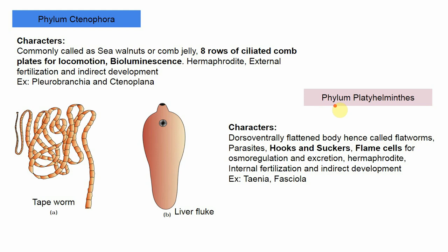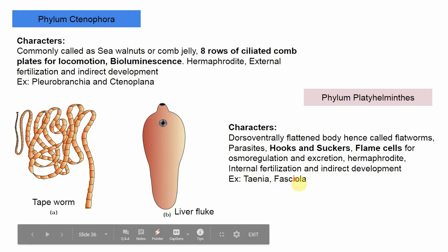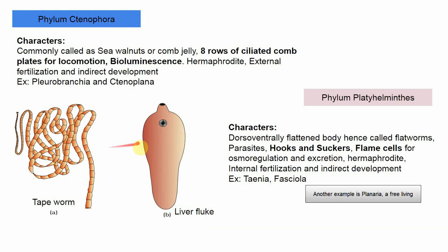The next is phylum Platyhelminthes, commonly called flatworms because the body is dorsoventrally flattened. The majority are parasitic; very few are free-living. In parasitic forms, special structures called hooks and suckers help in adhering to the host. Flame cells are present, mainly for osmoregulation and excretion. They are hermaphrodite with internal fertilization and indirect development. Examples: Taenia (tapeworm) and Fasciola (liver fluke).